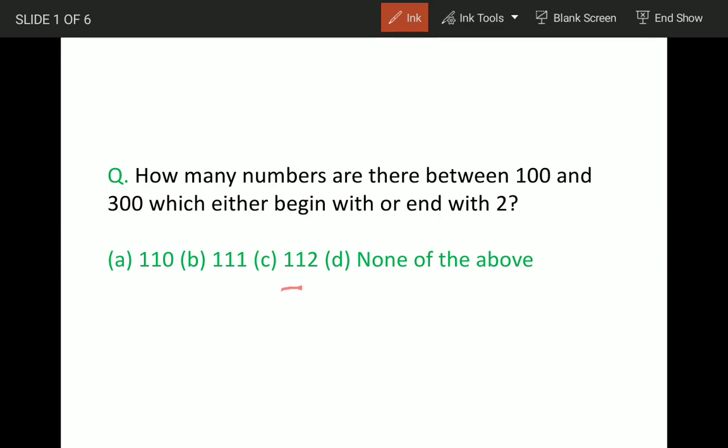We will understand the question. When we say between 100 and 300, that means 100 is not included and 300 is not included. So total numbers in all are going to be 199.